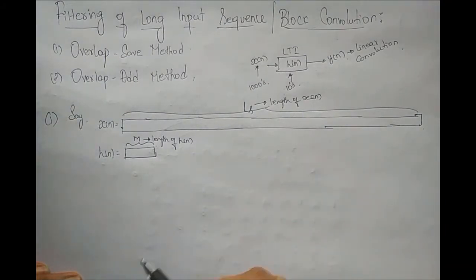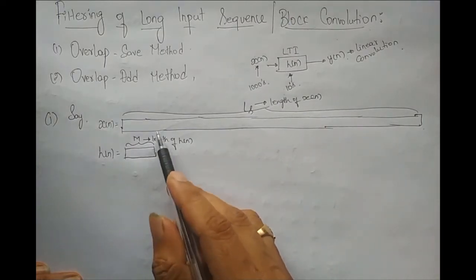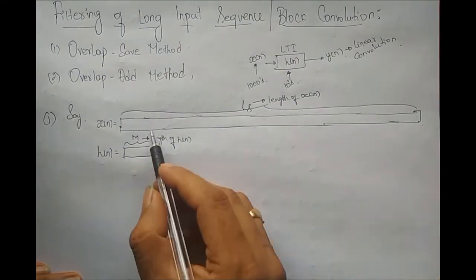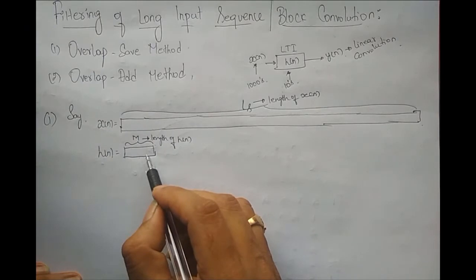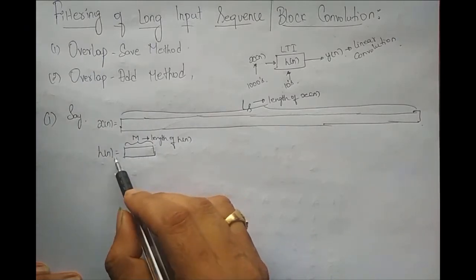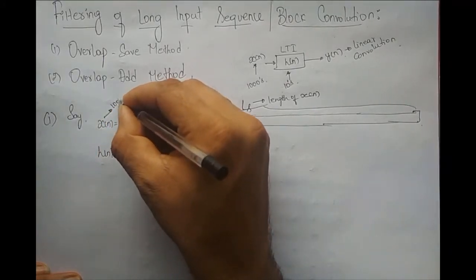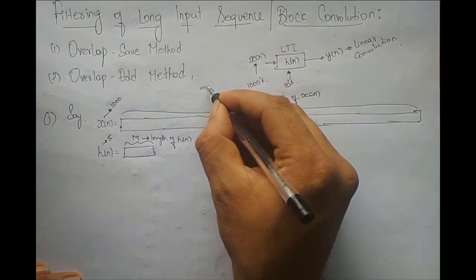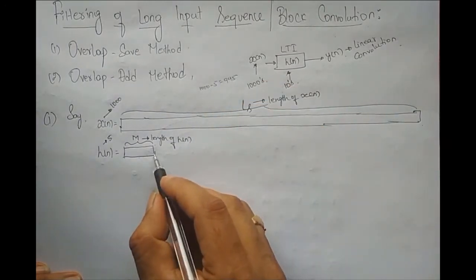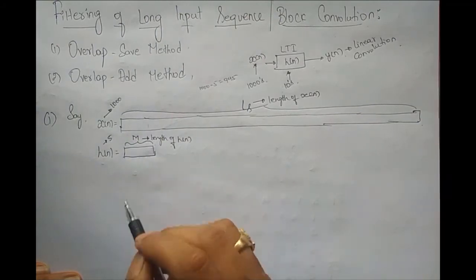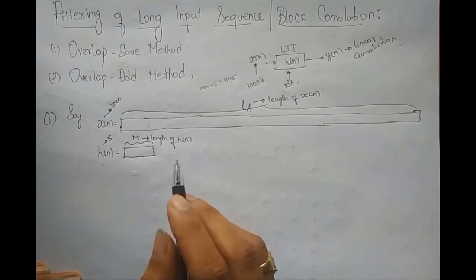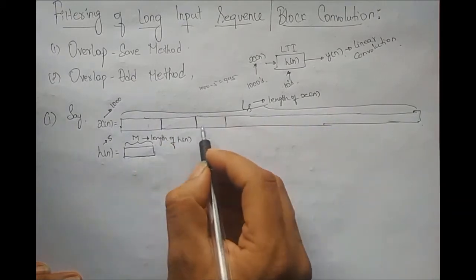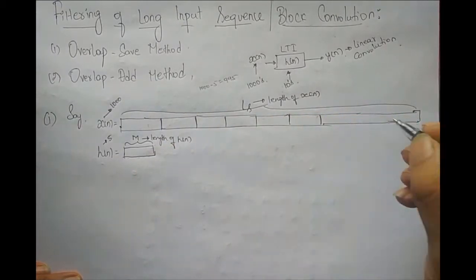If you are performing the filtering in the transform domain, circular convolution takes place. If I want to perform circular convolution of these two sequences, I need to make sure that both lengths are the same — both the input sequence and the impulse response. Since both sequence lengths are not the same, I need to pad an appropriate number of zeros to h of n. For example, if the length of x of n is 1000 and the length of the impulse response is 5, I need to pad 1000 minus 5, which is 995 zeros, so that both lengths are the same. This is very tedious. So what we do is segment the input sequence into shorter lengths.